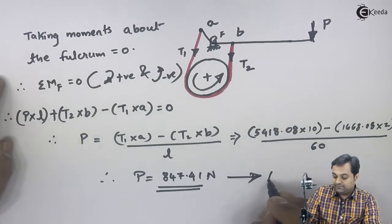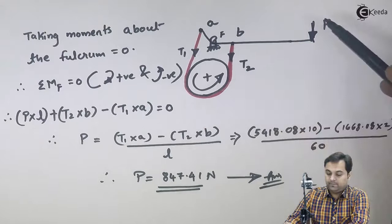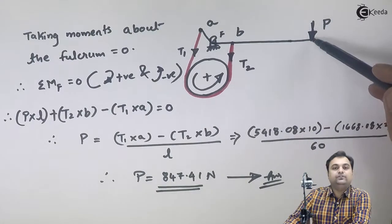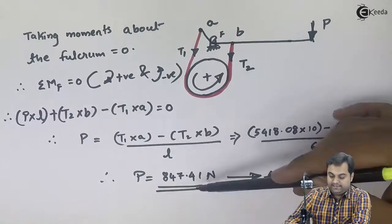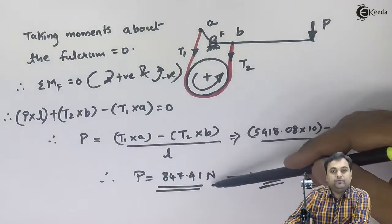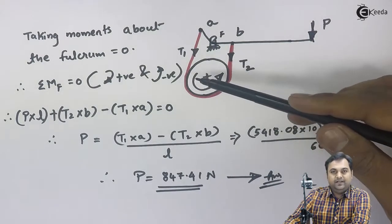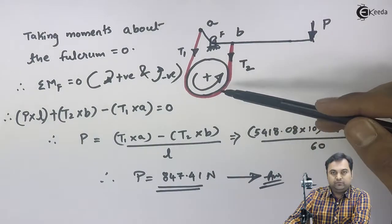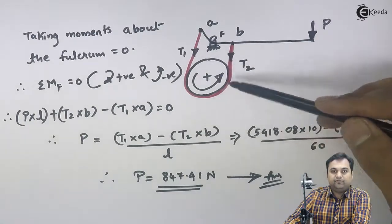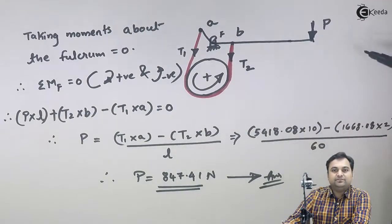That's the answer. For this differential band brake, an effort of 847.41 Newton must be applied at the end of the lever in order to apply the brakes — in other words, to stop the drum from rotating. With this we complete the problem.